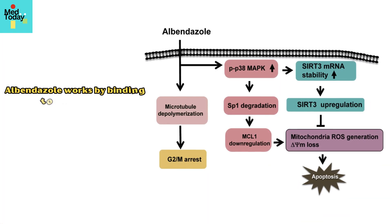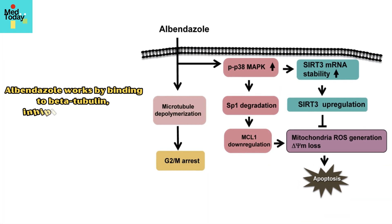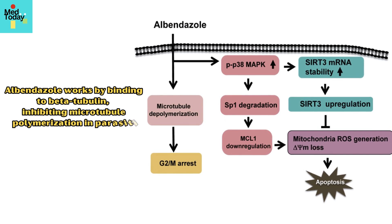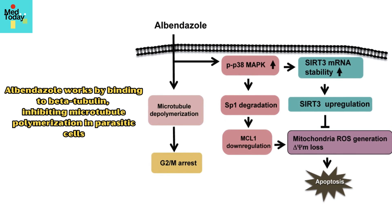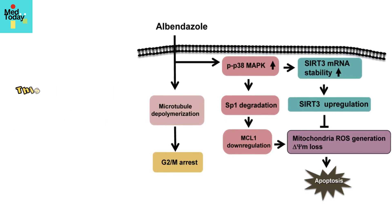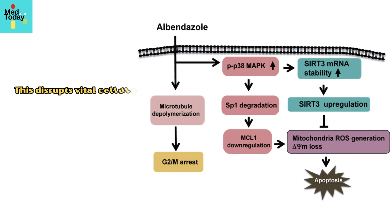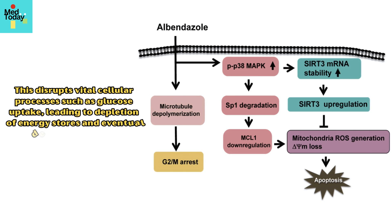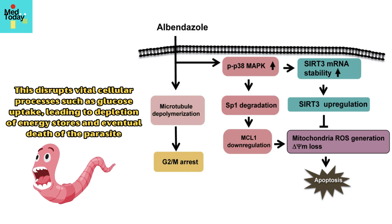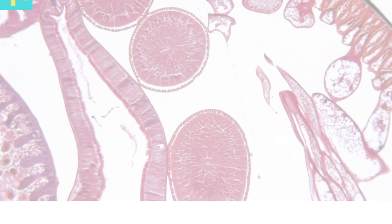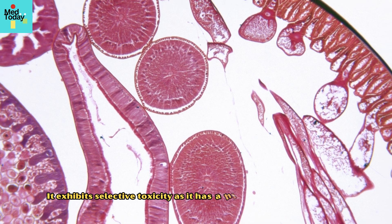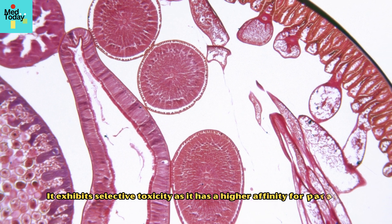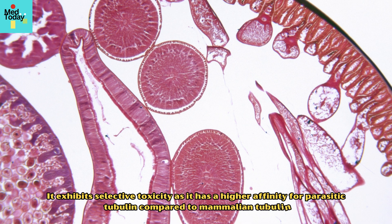Albendazole works by binding to beta-tubulin, inhibiting microtubule polymerization in parasitic cells. This disrupts vital cellular processes such as glucose uptake, leading to depletion of energy stores and eventual death of the parasite. It exhibits selective toxicity as it has a higher affinity for parasitic tubulin compared to mammalian tubulin.